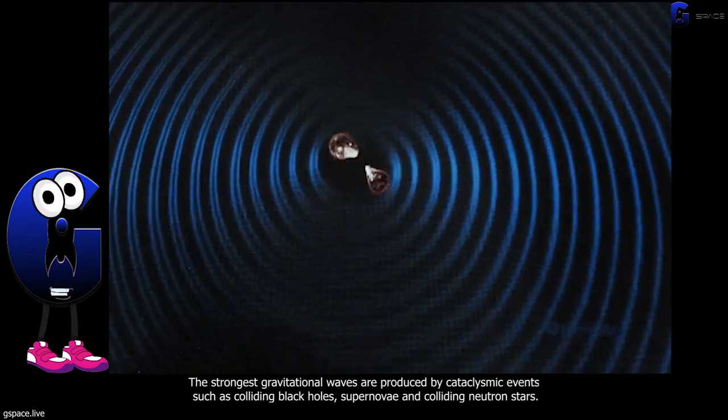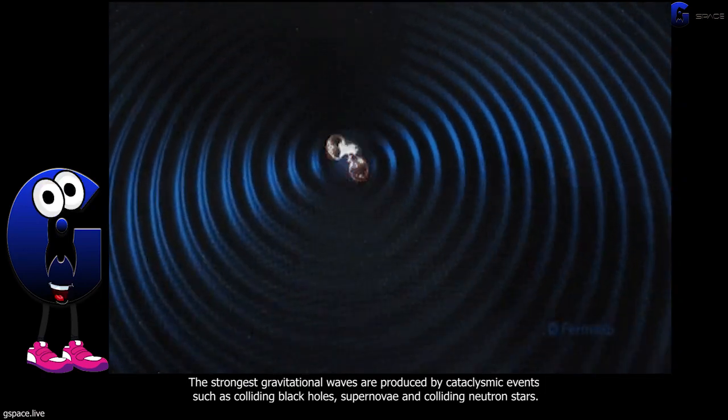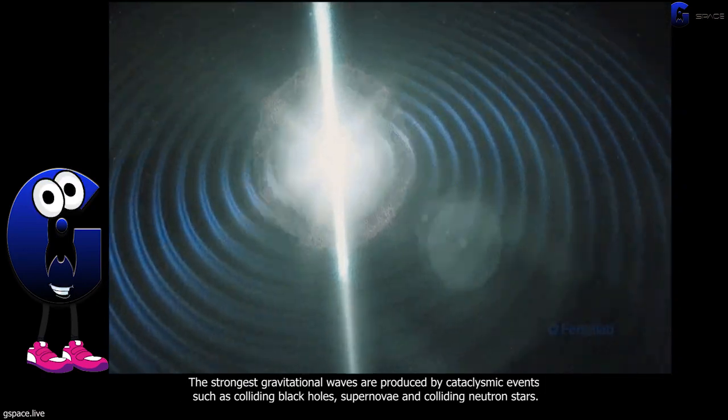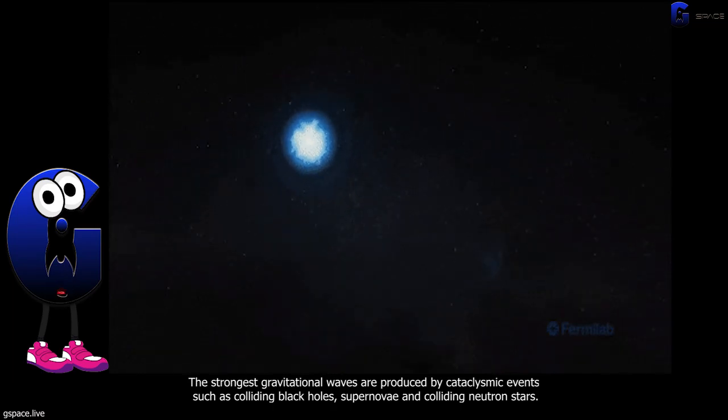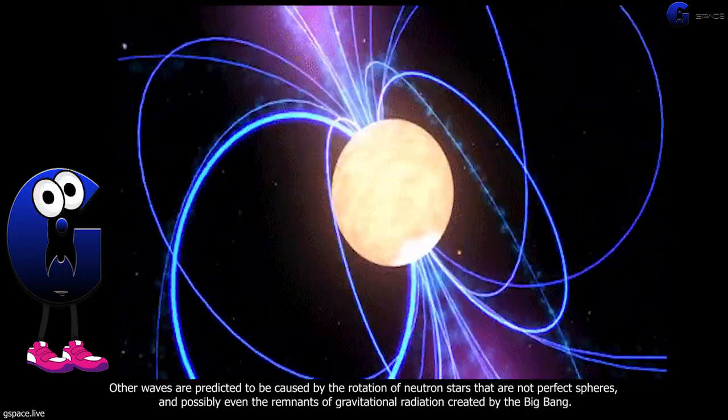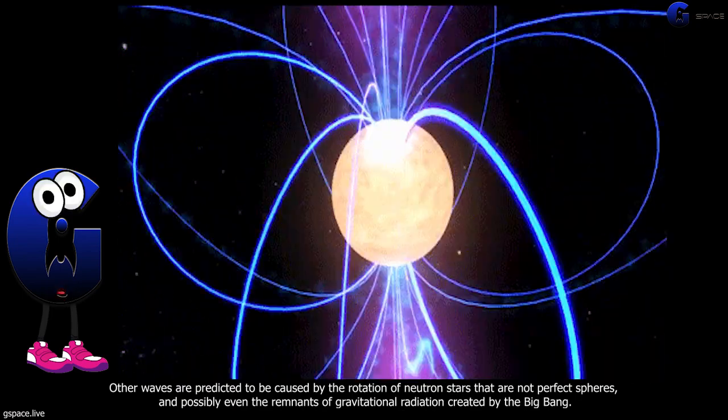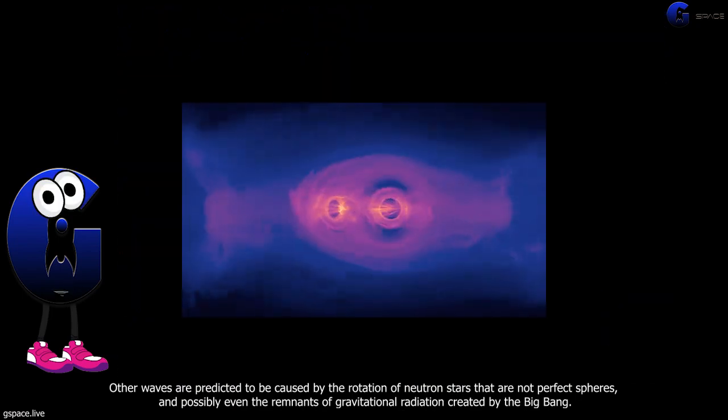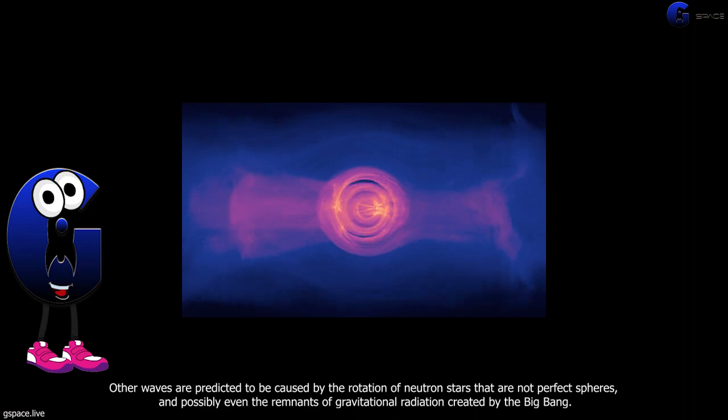The strongest gravitational waves are produced by cataclysmic events, such as colliding black holes, supernovae and colliding neutron stars. Other waves are predicted to be caused by the rotation of neutron stars that are not perfect spheres and possibly even the remnants of gravitational radiation created by the Big Bang.